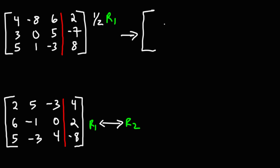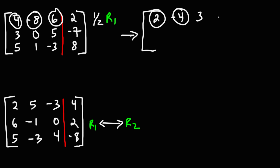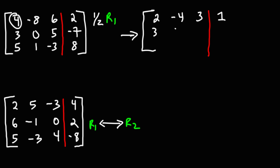Everything else is going to stay the same. So 4, negative 8, 6 will become 2, negative 4, 3. If you multiply 4 by 1/2, you get 2. If you multiply negative 8 by 1/2, you get negative 4. 6 times 1/2 is 3. And we'll also multiply the 2 by 1/2, which gives us 1. Then we rewrite everything else exactly the way it was before. That's how we perform this particular elementary row operation.